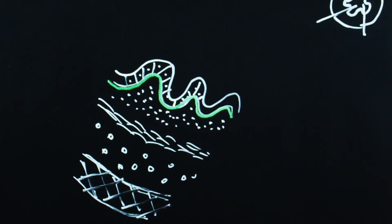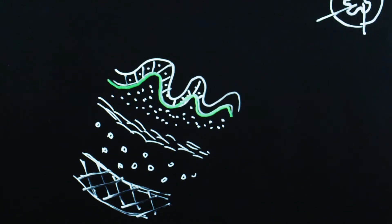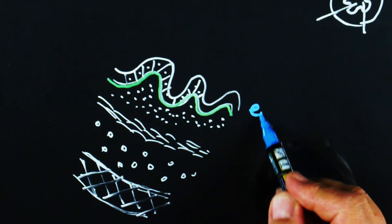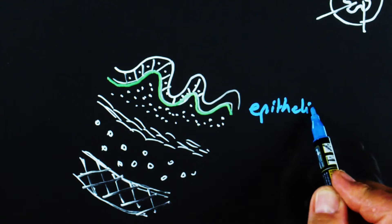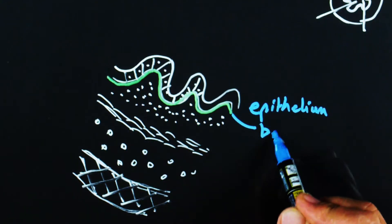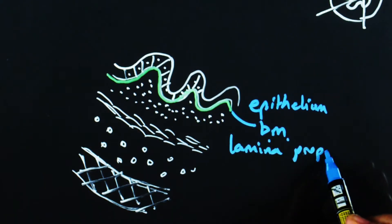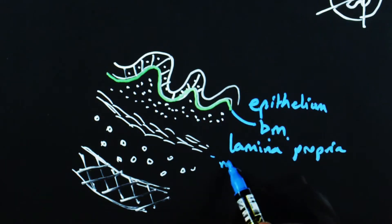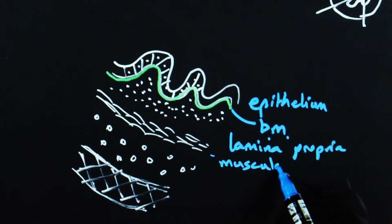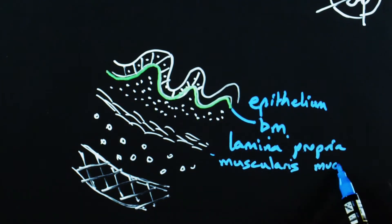So let's label the diagram. So first of all, the lining epithelium with its basement membrane, which I'll abbreviate here to just BM. Beneath that, the lamina propria. Then the muscularis mucosae, literally meaning the muscle layer of the mucosa.